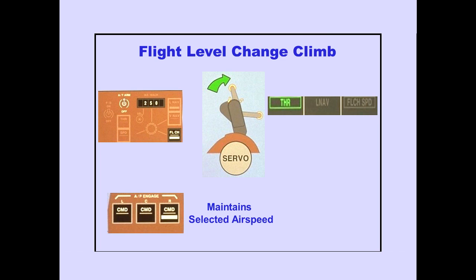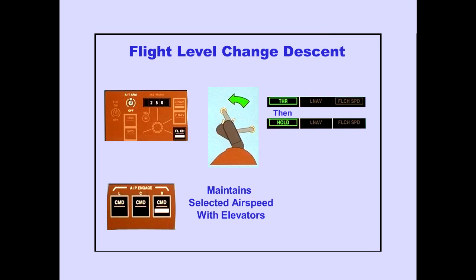For a flight level change climb, the autothrottle increases thrust to obtain the required rate of climb. Thrust is displayed on the PFD, since the required thrust is variable. The autopilot flight director uses the elevator to maintain the selected airspeed by varying the pitch angle. For a flight level change descent, thrust is enunciated, then the autothrottle reduces thrust to achieve the desired rate of descent. Hold will be displayed on the PFD after the autothrottle reduces thrust. The autopilot flight director uses the elevators to maintain the selected airspeed by varying the pitch angle.